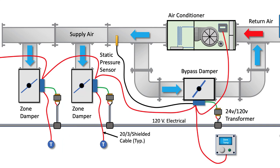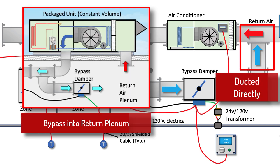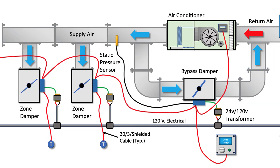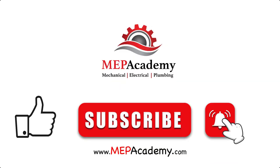There are two simple setups for the bypass air: it can either be ducted directly into the return air duct, or it can be bypassed into the return air plenum if the plenum is rated and approved for this use. Because the fan is always running at constant speed, there is no fan energy savings when zone dampers start closing, as opposed to a true VAV system where the fan speed is reduced.